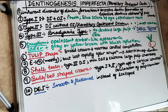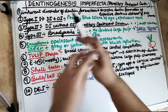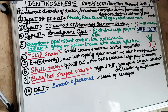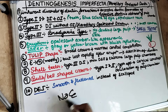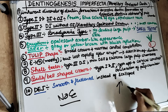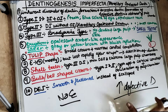Talking about Dentinogenesis Imperfecta — in DI, the dentine is going to be imperfect. So there is going to be an abnormal formation of the dentine. This is an inherent disorder of dentine formation characterized by excessive formation of defective dentine. Unlike Amelogenesis Imperfecta where there was little or no enamel, in Dentinogenesis Imperfecta there is increased but impaired dentine.